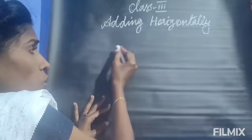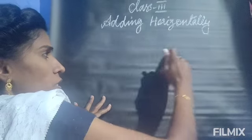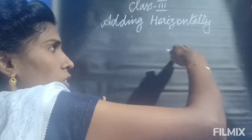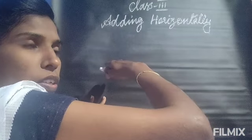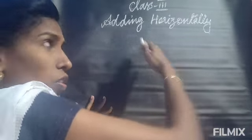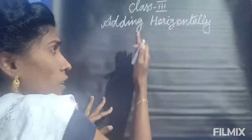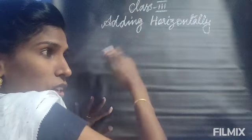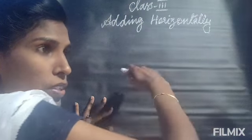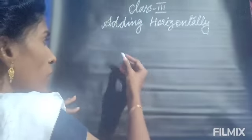Horizontal. Horizontal means on the base — not height-wise, but on the base. We will learn how to add the numbers this way.